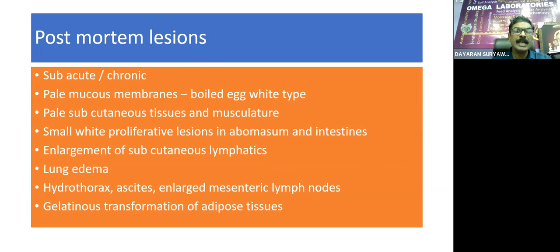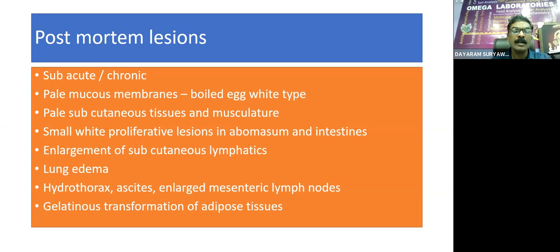Postmortem lesions of subacute and chronic type: pale mucous membranes resembling boiled egg white, pale subcutaneous tissues and musculature, small white proliferative lesions in abomasum and intestines, enlargement of subcutaneous lymphatics, lung edema, hydrothorax, ascites, enlarged mesenteric lymph nodes, and gelatinous transformation of adipose tissue. This gelatinous transformation occurs because, with enteropathy, glucose and energy are insufficient, so adipose tissues are converted to gelatinous mass through gluconeogenesis.